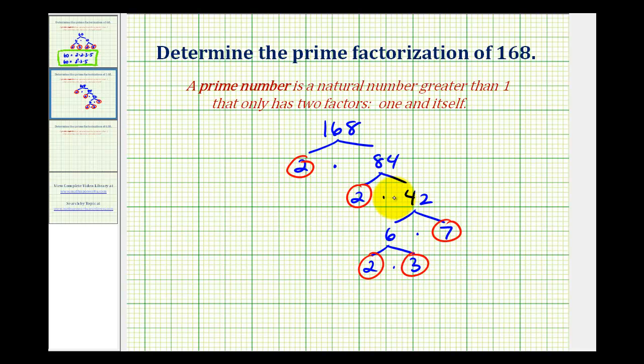So now we have the prime factorization of 168. We'll have three factors of two, a factor of three, and a factor of seven. And we can express this two different ways, in expanded form, or using exponents. So be sure to read the directions to make sure you express your prime factorization in the correct form.